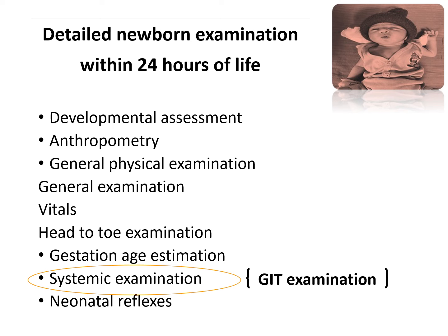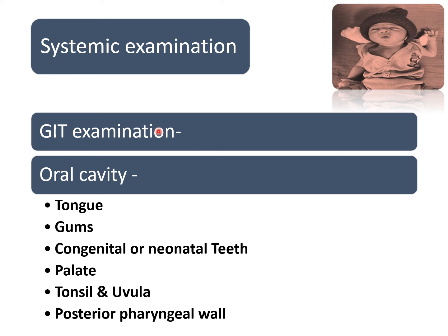GIT examination always starts from oral cavity examination. So first we should check the tongue, gums, and any congenital teeth. Then we have to check any lesion over the palate, tonsil, and also the posterior pharyngeal wall.